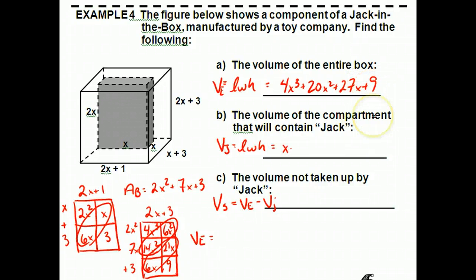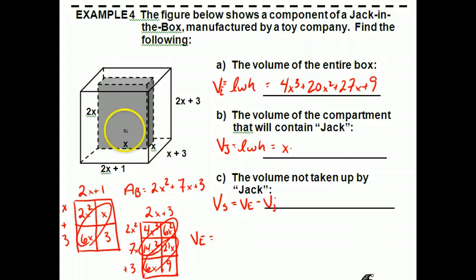That sets you up to finish the problem. Now figure out the volume of the inside compartment — x by x by two x — put that in for VJ, and subtract from the total volume VE. I'll leave that for you as an exercise to finish.